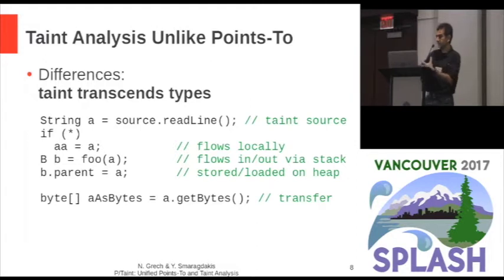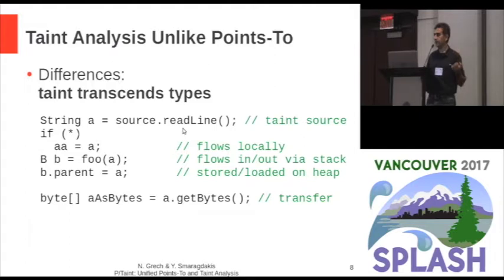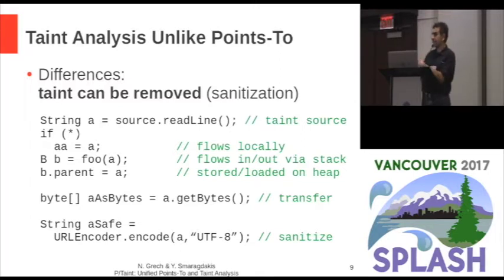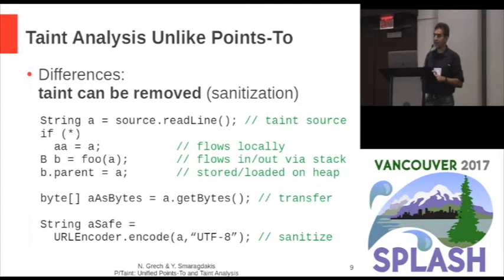One issue is that taint transcends types. The same kind of taint — namely that these values are tainted from user input from the keyboard — can move from a string to something that's a byte array. So taint is not inherently a property of the value; the value is entirely different after we transform a string to a byte array. And that's not the only thing. Taint can be turned on and off. There is a concept called sanitization — APIs that ensure that our values are safe — so we cannot propagate taint any further. That's a notion that has no counterpart in pointer analysis, and it also shows that taint is not permanently attached to values.